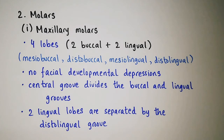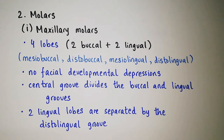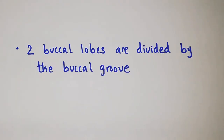When we talk about maxillary molars, they have four lobes — two buccal and two lingual. These are the mesiobuccal, distobuccal, mesiolingual, and distolingual lobes. There are no facial developmental depressions. The central groove divides the buccal and lingual grooves. The two lingual lobes are separated by the distolingual groove, and the two buccal lobes are divided by the buccal groove.